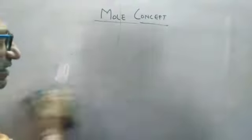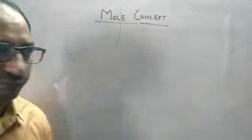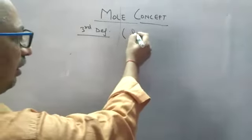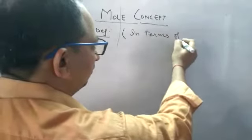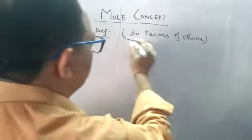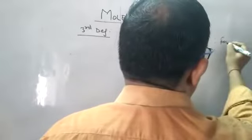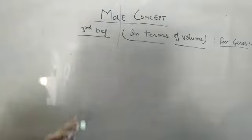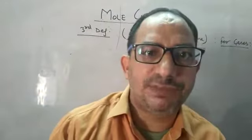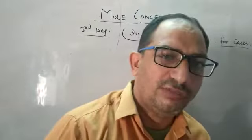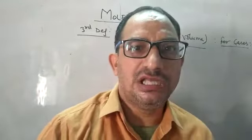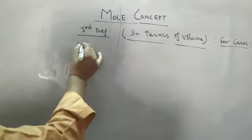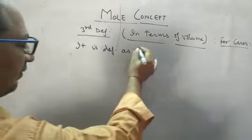Now the third and last definition — in terms of volume. This definition is applicable only for gases. At STP (standard temperature and pressure), one mole of a gas occupies a volume of 22.4 liters.